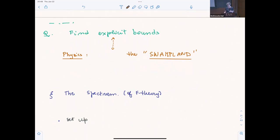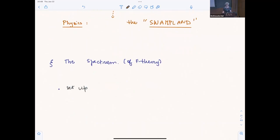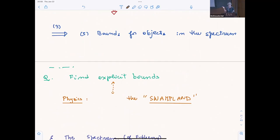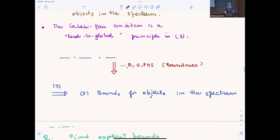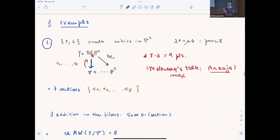Part of the program: what I'll do at the end is show the boundedness theorem, proved very recently, implies bounds for objects in the spectrum. The questions in mathematics would be to find the explicit bounds. In physics, this is related to the swampland program.